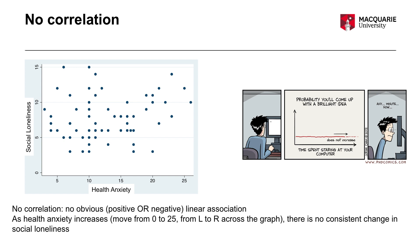This is also represented in the right-hand side image, showing the probability of coming up with a brilliant idea on the y-axis and time spent staring at your computer on the x-axis. As time spent staring at your computer increases, there's no change in the probability of coming up with a brilliant idea — a very good demonstration of no correlation, no association.